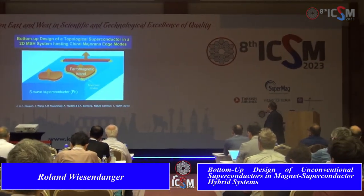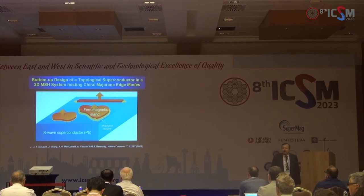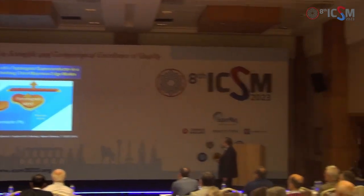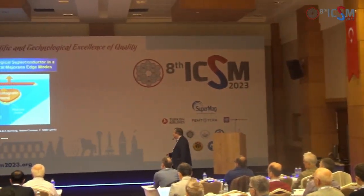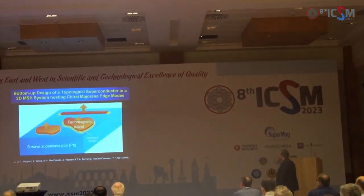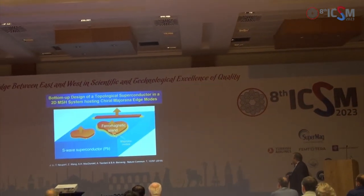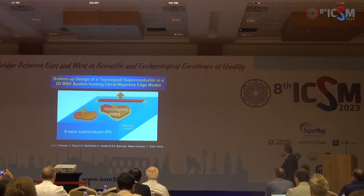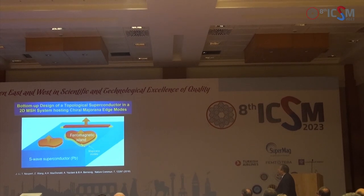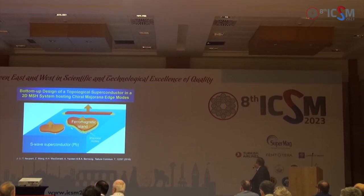Let me start with the bottom-up design of a topological superconductor: a two-dimensional superconductor hybrid system hosting Chiral Majorana modes. This was motivated by a theory publication back in 2016 by the Princeton group, who proposed that if you grow a ferromagnetic island with out-of-plane magnetization on an s-wave superconductor—they proposed to use lead—you should be able to observe Majorana modes.